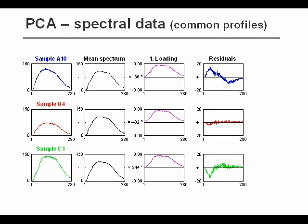And when we subtract, for example from the first sample, 86 times the loading from the average spectrum, then we get the residual, the part that has not been explained. If these residuals are high, well then we can extend it and extract one more principal component.